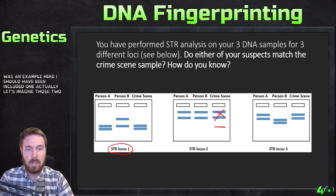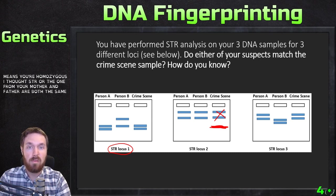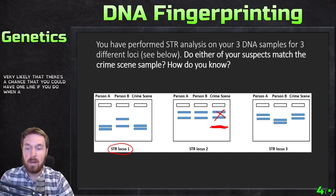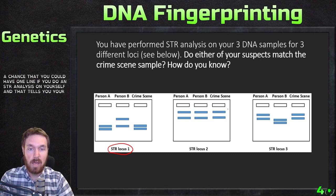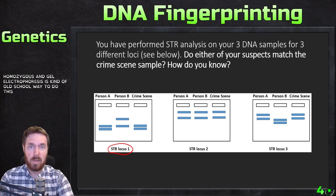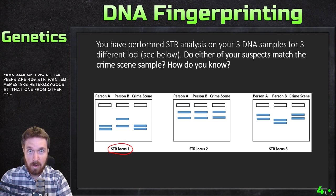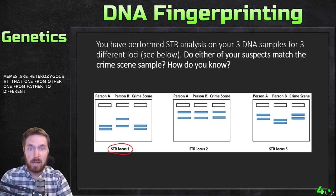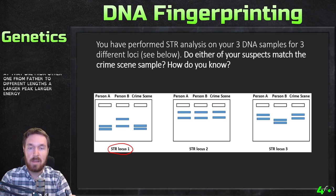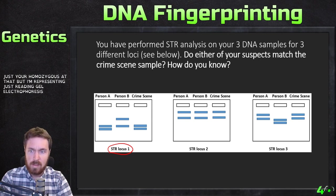If you had just one line, that means you're homozygous at that STR — the copy from your mother and father have the same number of repeats. Modern labs now use laser technology where they can see peak sizes: two small peaks means you're heterozygous at that locus, one from mother and one from father; a larger peak suggests homozygosity. But here we're reading gel electrophoresis results.